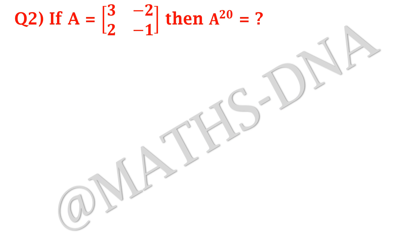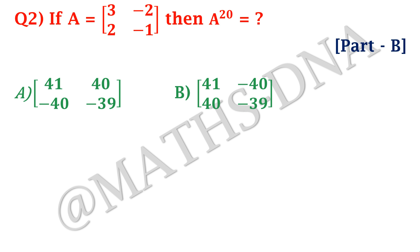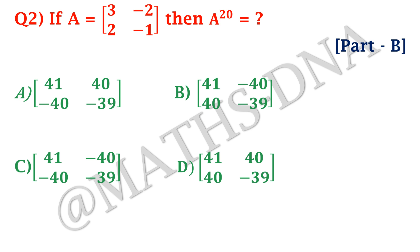The second question asked in the NET examination: if A is a 2×2 matrix with entries 3, −1, 2, −1, then A raised to 20 equals? The options are A) [41, 40; −40, −39], B) [41, −40; 40, −39], C) [41, −40; −40, −39], and D) [41, 40; 40, −39].